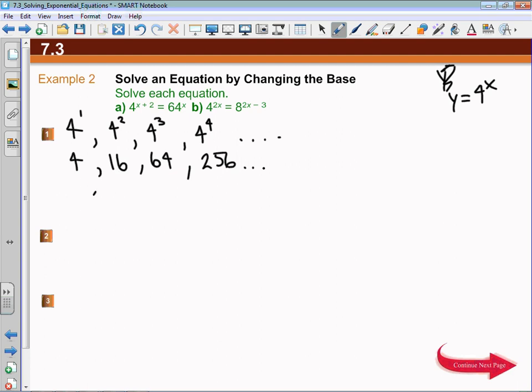The bottom line here is that 64 can be substituted or replaced by 4 cubed. So my equation becomes 4 to the power of x plus 2 equals 4 cubed to the power of x. We have to make sure we get a single power to an exponent on each side of the equation. This becomes 4 to the power of x plus 2 on the left-hand side. On the right-hand side, those exponents are going to multiply, so I get 4 to the power of 3x.